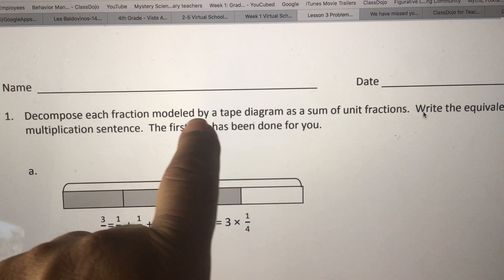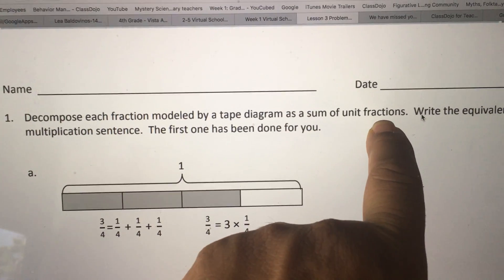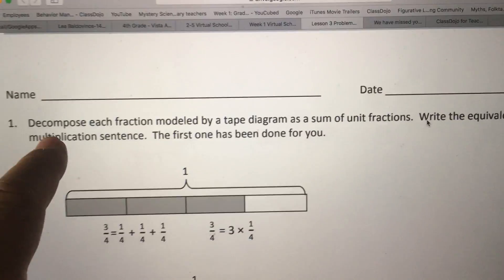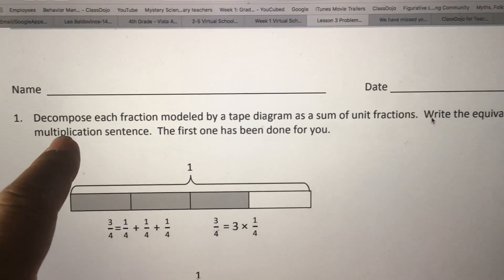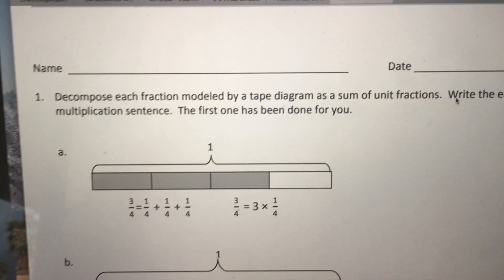It says decompose each fraction modeled by a tape diagram as a sum of unit fractions. So first sum, addition, and then we're gonna write the equivalent multiplication sentence. So that's product, times, and it says the first one has been done for you.